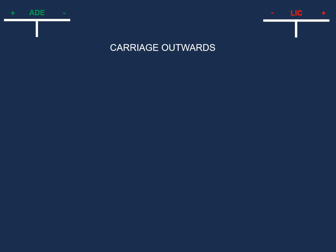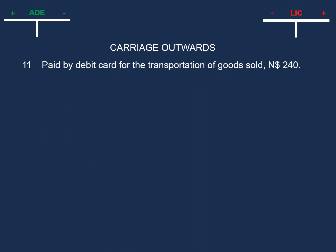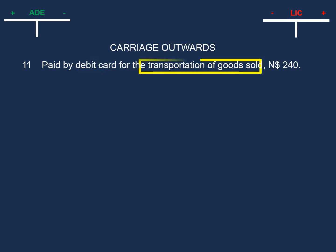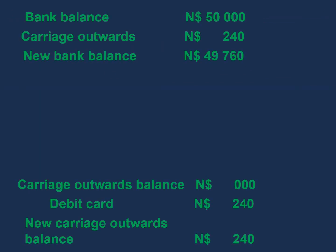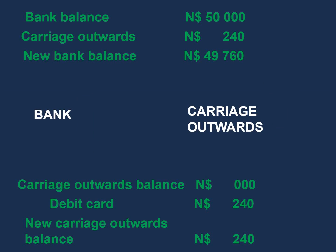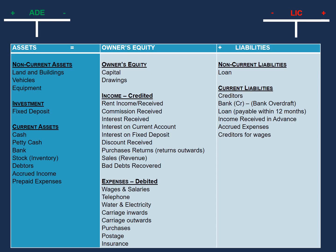Now let's look at a transaction involving carriage outwards. On the 11th, paid by debit card for the transportation of goods sold, 240. The two accounts we can identify are bank, because it was paid with a debit card, and carriage outwards, because this is carriage on goods sold, meaning we deliver goods to our customers. This will involve our cash book, but we enter the amount in the bank column. Our bank balance will decrease and our carriage outwards will increase. Since bank is an asset that decreased, we credit it; since carriage outwards is an expense that increased, we debit it.